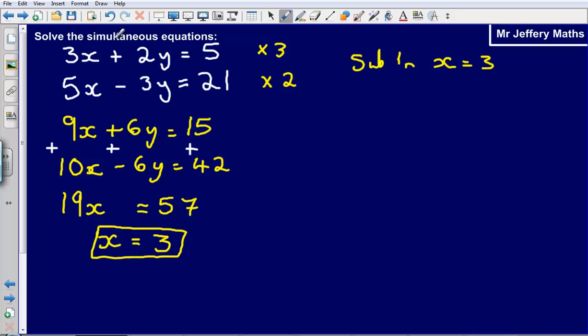So what this will leave me with then if I am putting it into this first one I have got 3 multiplied by 3 plus 2y is equal to 5. So 9 plus 2y is equal to 5. Now if I subtract this 9 from both sides that will leave me with 2y is equal to negative 4 and then y will be equal to negative 2.